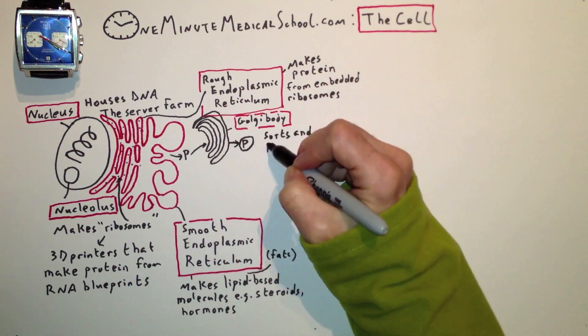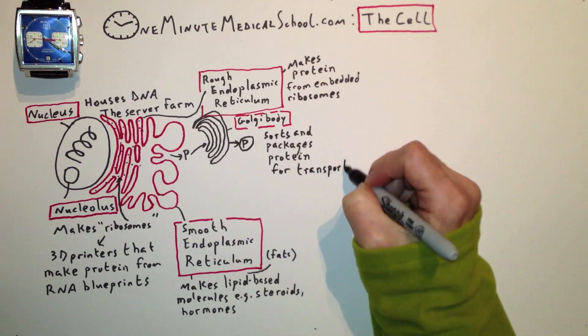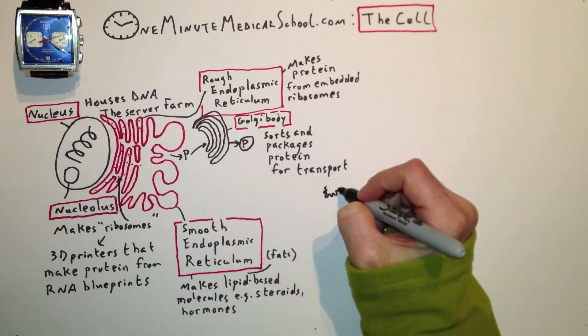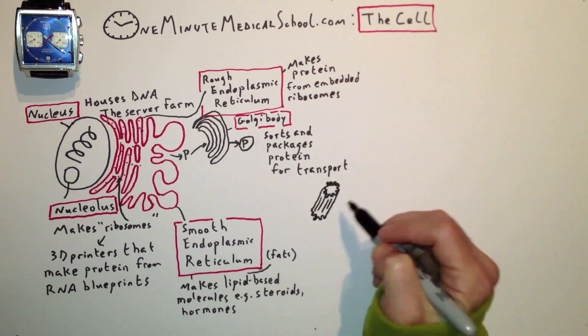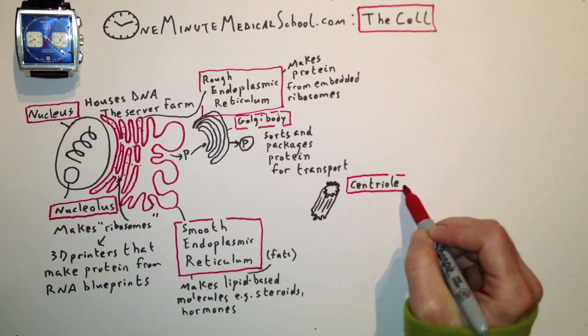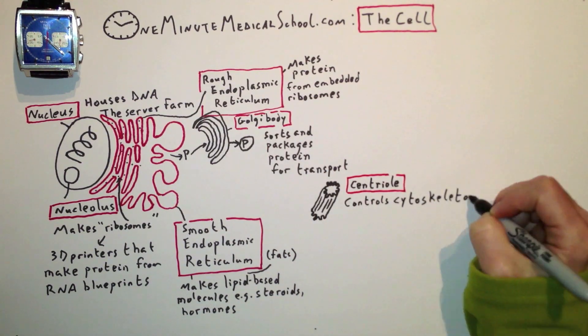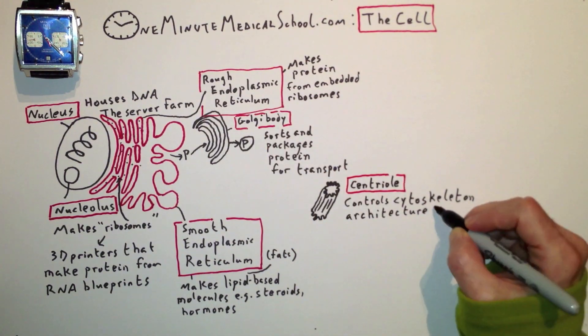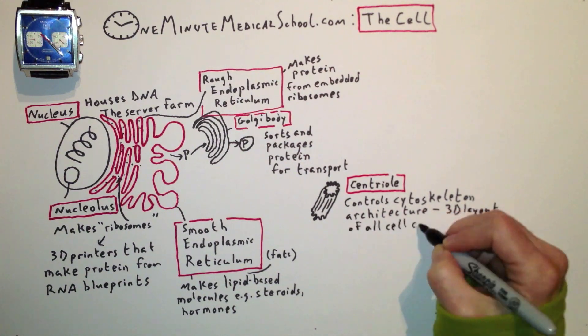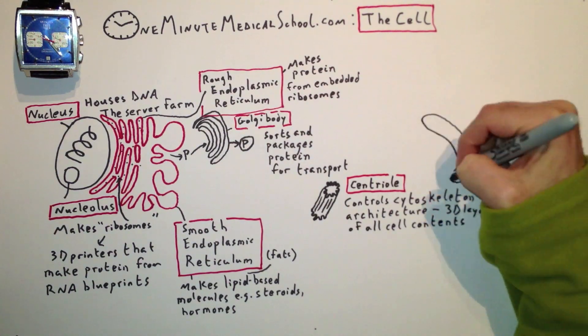The Golgi bodies take naked proteins and package them for transportation. The centriole controls cytoskeletal architecture and is particularly important during cell division.